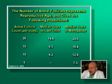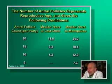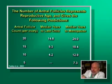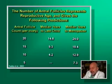This is the antral follicle count per ovary. If you have an antral follicle count of 20 per ovary, or 40 antral follicles total, you probably have 15 more years of fertility left and will likely go through menopause in about 24 years. On the other hand, if you're down to 10 per ovary — an antral follicle count of 20 total — you may only have four years of fertility left and are likely to go through menopause about 13 years later.